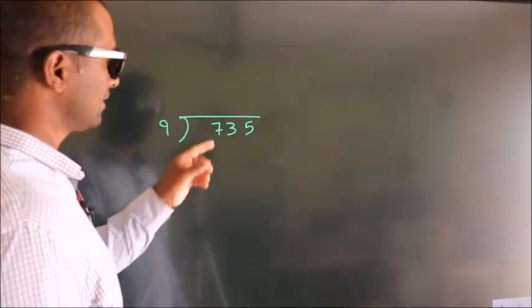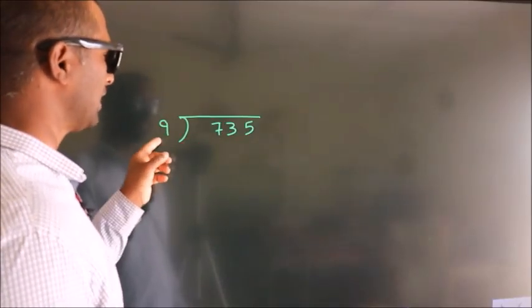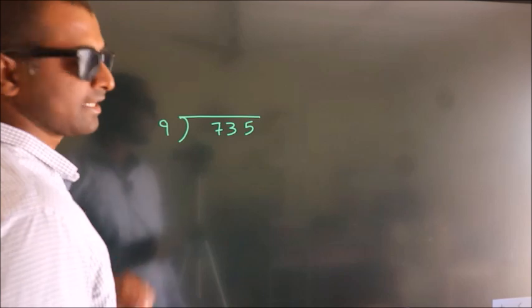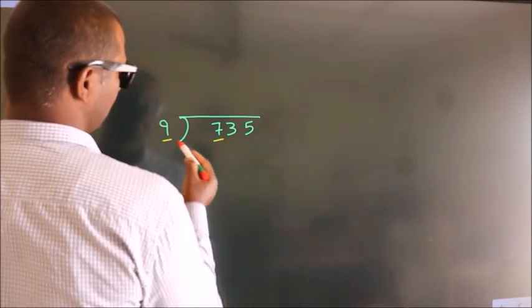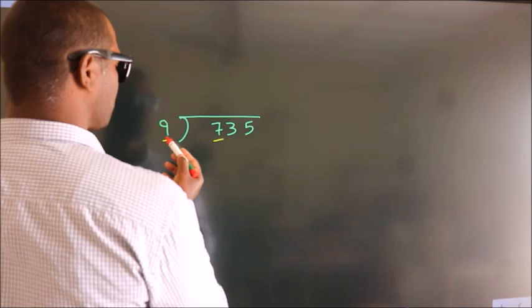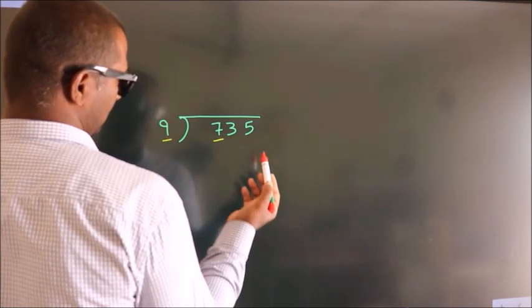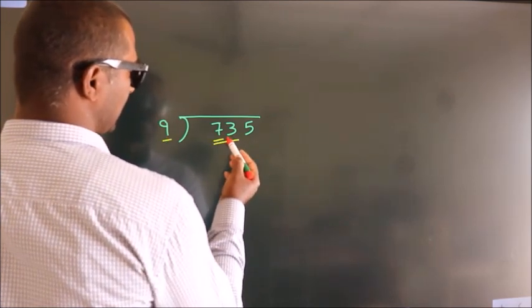How to divide 735 by 9? See, here we have 7, here 9. 7 is smaller than 9, so we should take two numbers, 73.